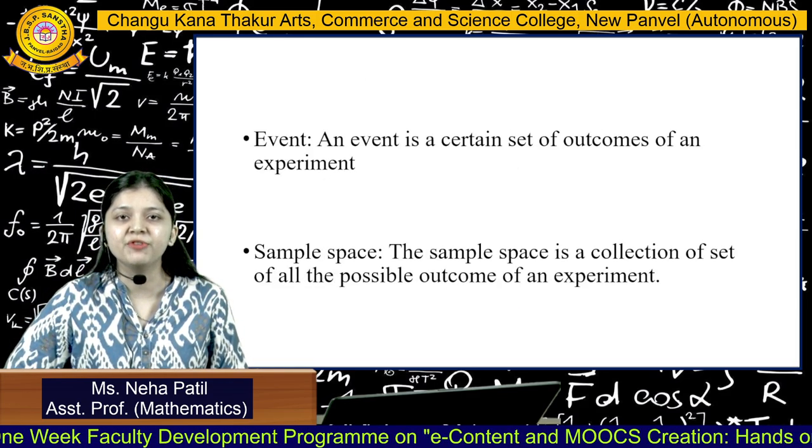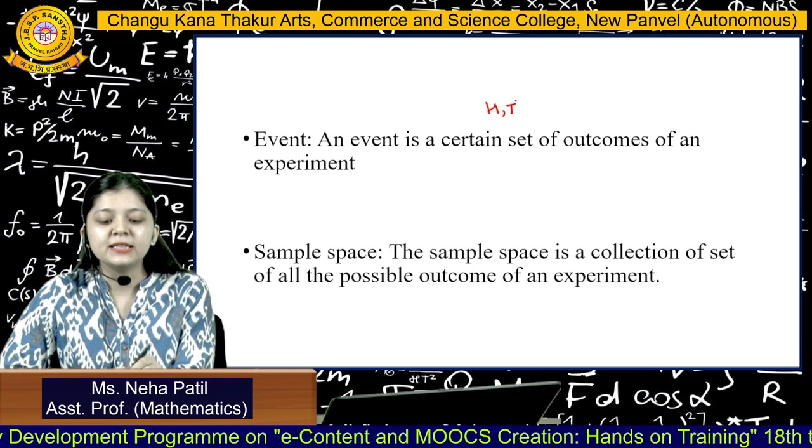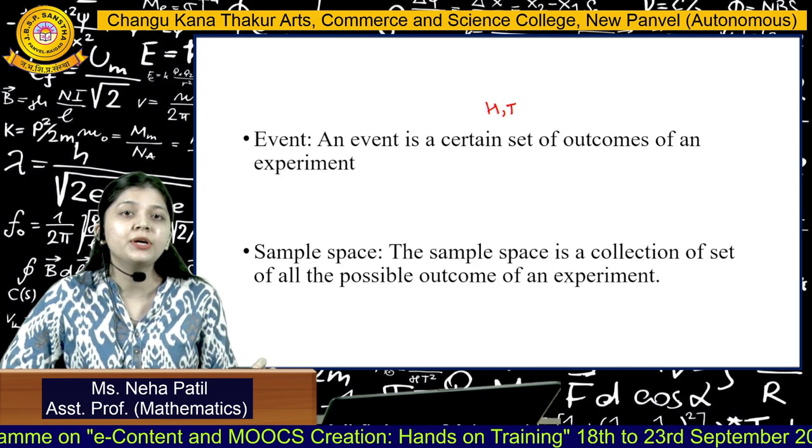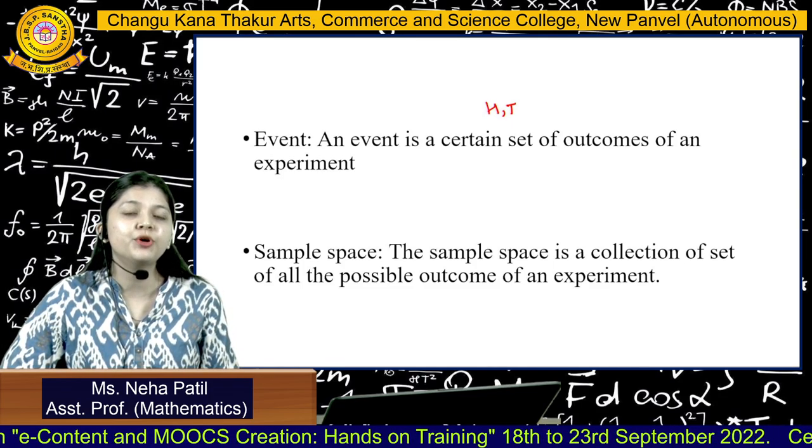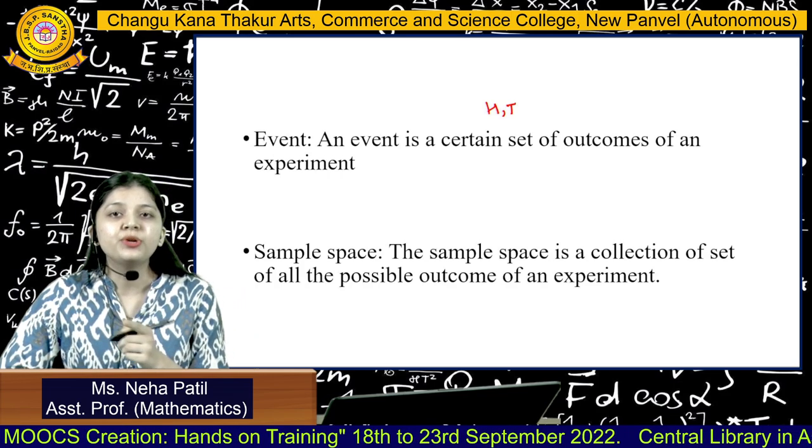Next is an event. When out of all the outcomes that we have seen, that is the heads and tails, when we want any certain outcomes, when we are talking about getting only a heads, we are talking about one certain outcome. This is defined as your event.